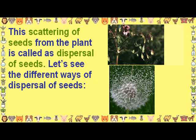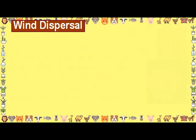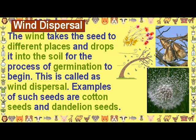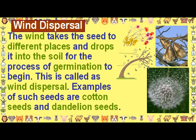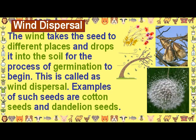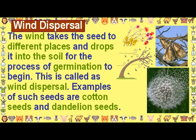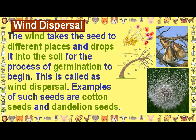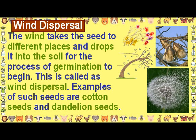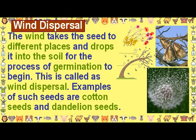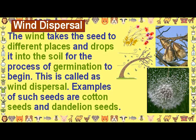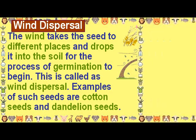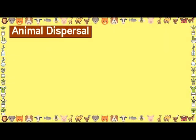Let's see the different ways of dispersal of seeds. The wind takes the seed to different places and drops it into the soil for the process of germination to begin. This is called wind dispersal. Examples of such seeds are cotton seeds and dandelion seeds.